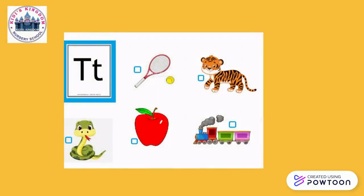Activity time. So first we are going to take the right pictures. T, tennis bat. That's right. T, tiger. Correct. T, snake. No. T, apple. No. T, train. That's right.